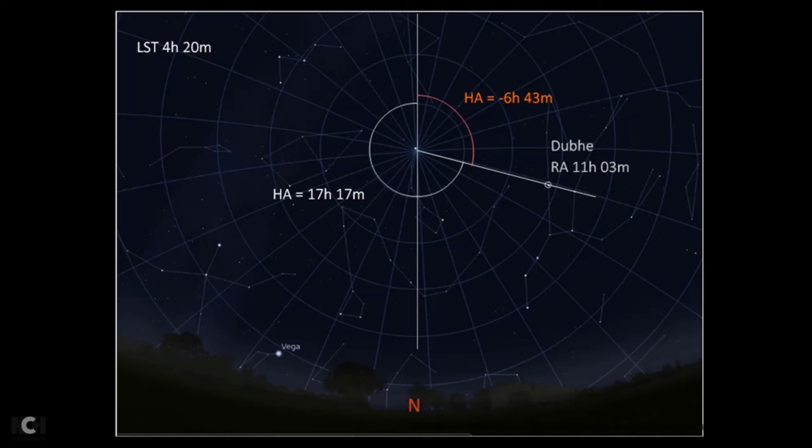So this is the two different ways of measuring hour angle. I think I'm possibly more comfortable with the first one, 17 hours and 17 minutes. I think it's simpler.